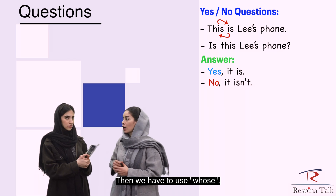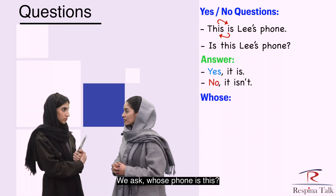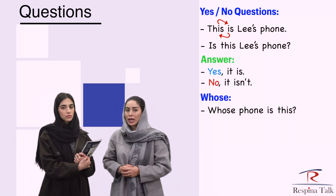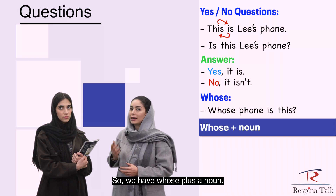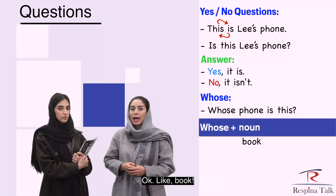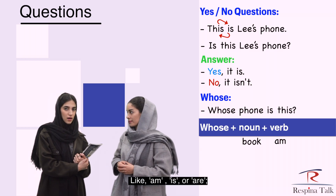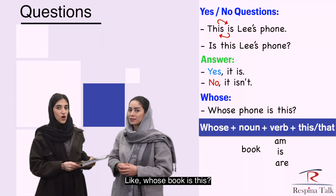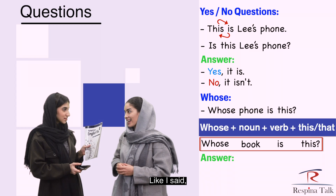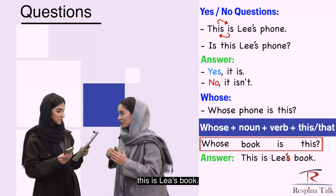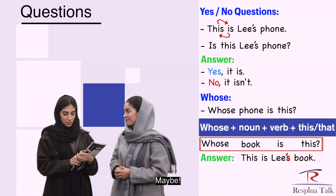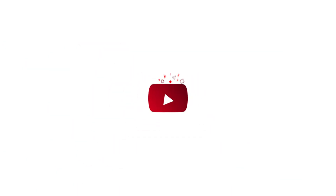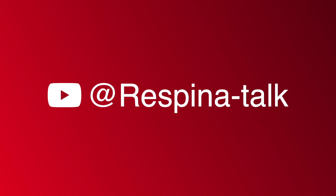But what if I want to know about the owner of something and I don't want to ask yes-no questions? Then we have to use whose. We ask, whose phone is this? So, we have whose plus a noun, like book, and the be verb — am, is, or are — and then this or that. Like, whose book is this? This is Lee's book. Please give it back to him. Maybe. One day. Bye. Bye.